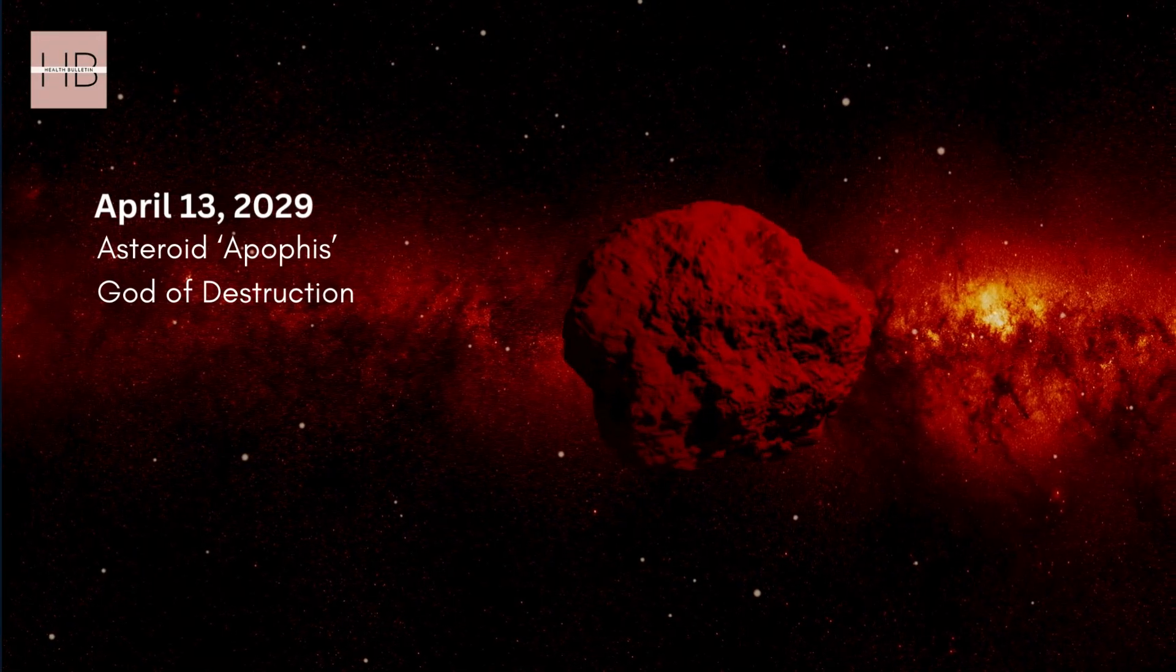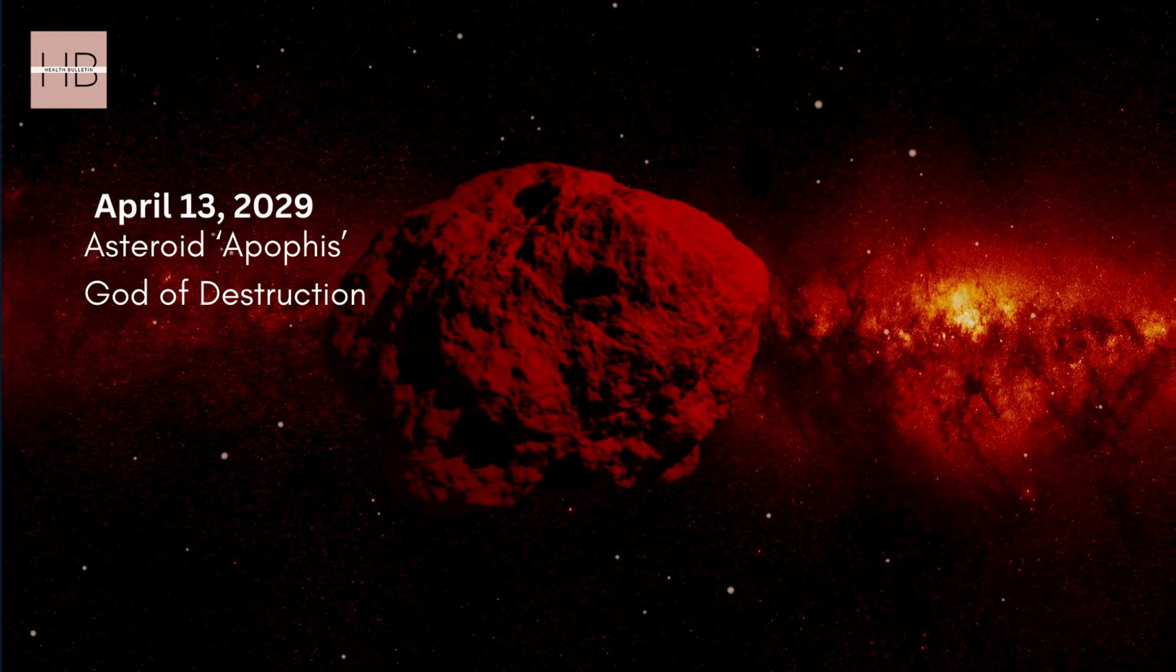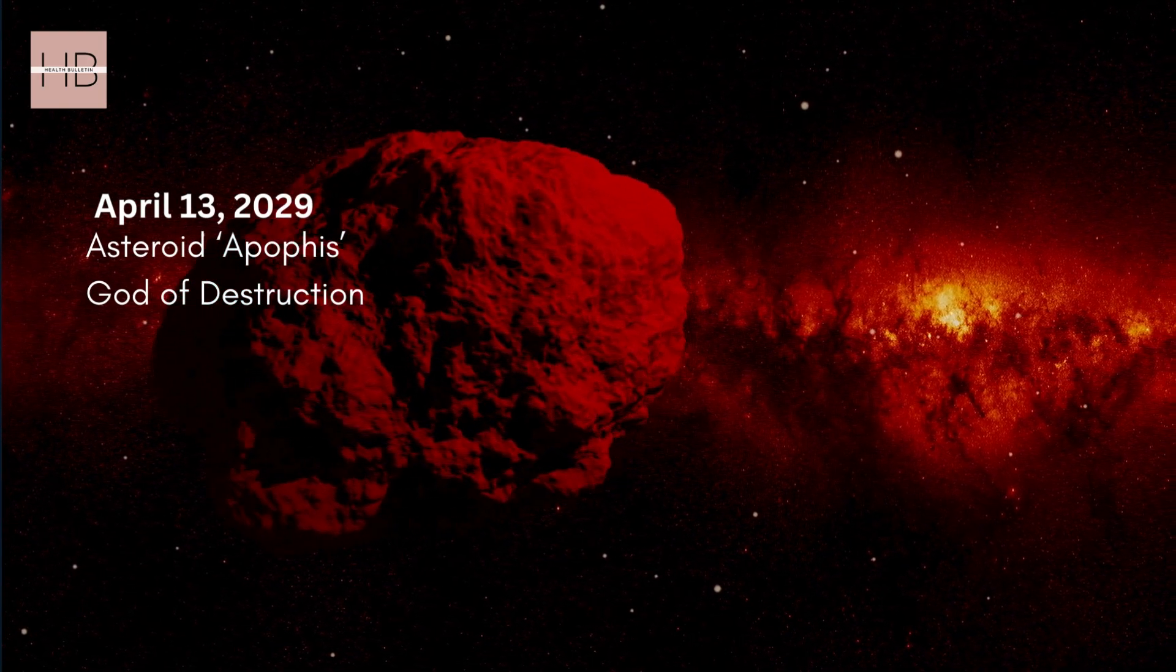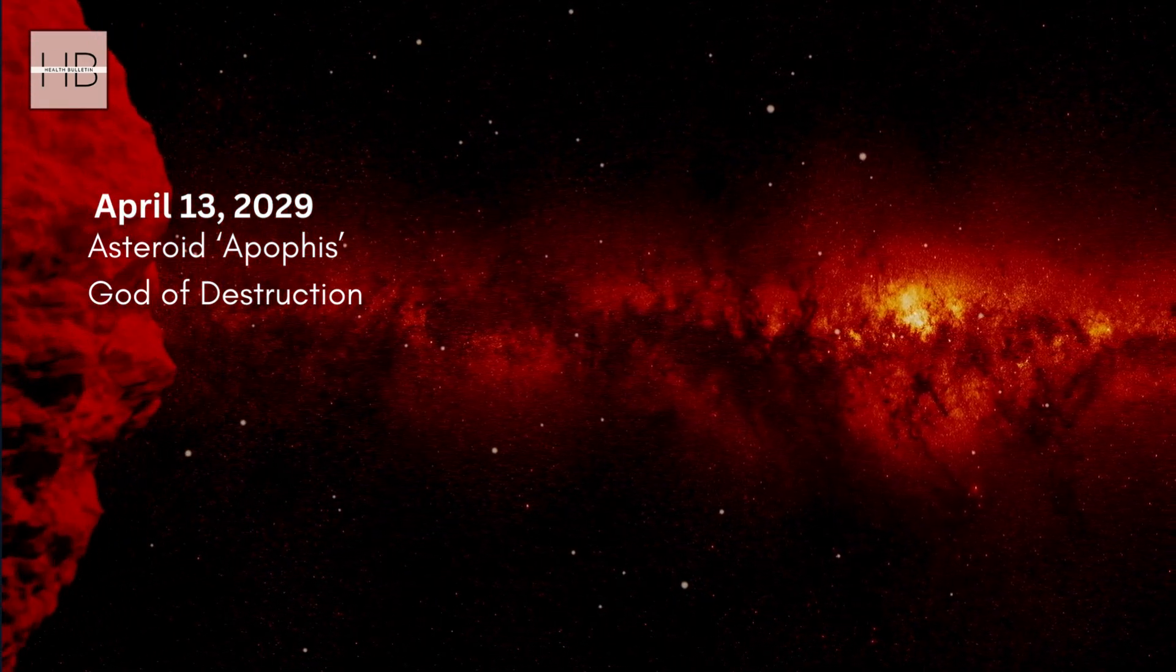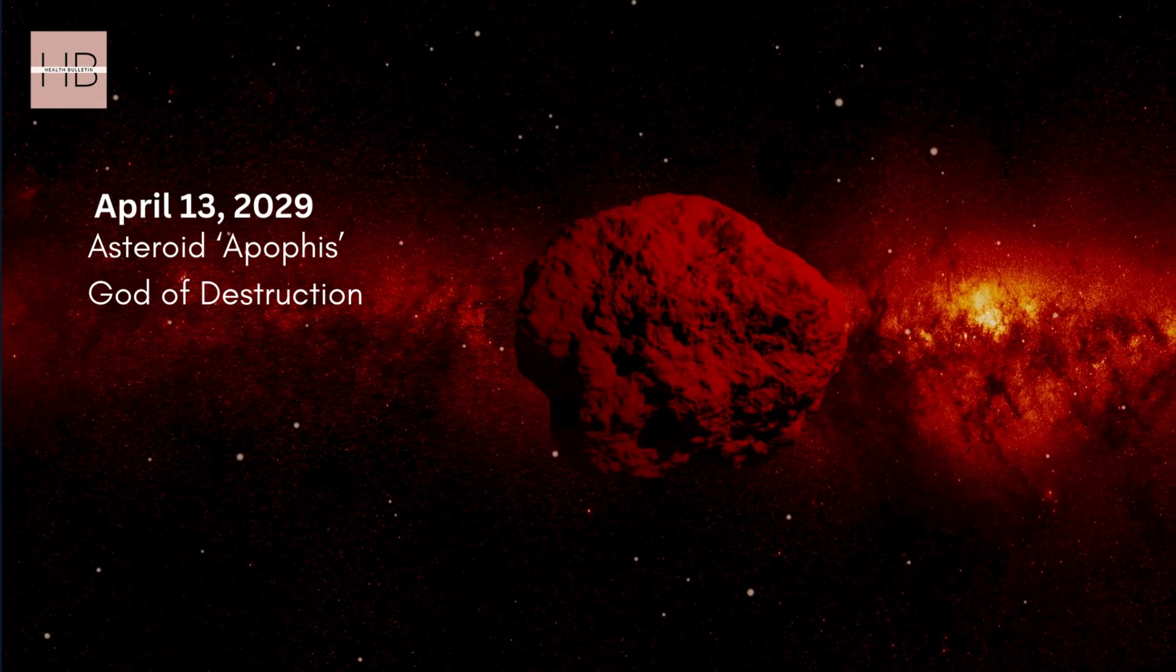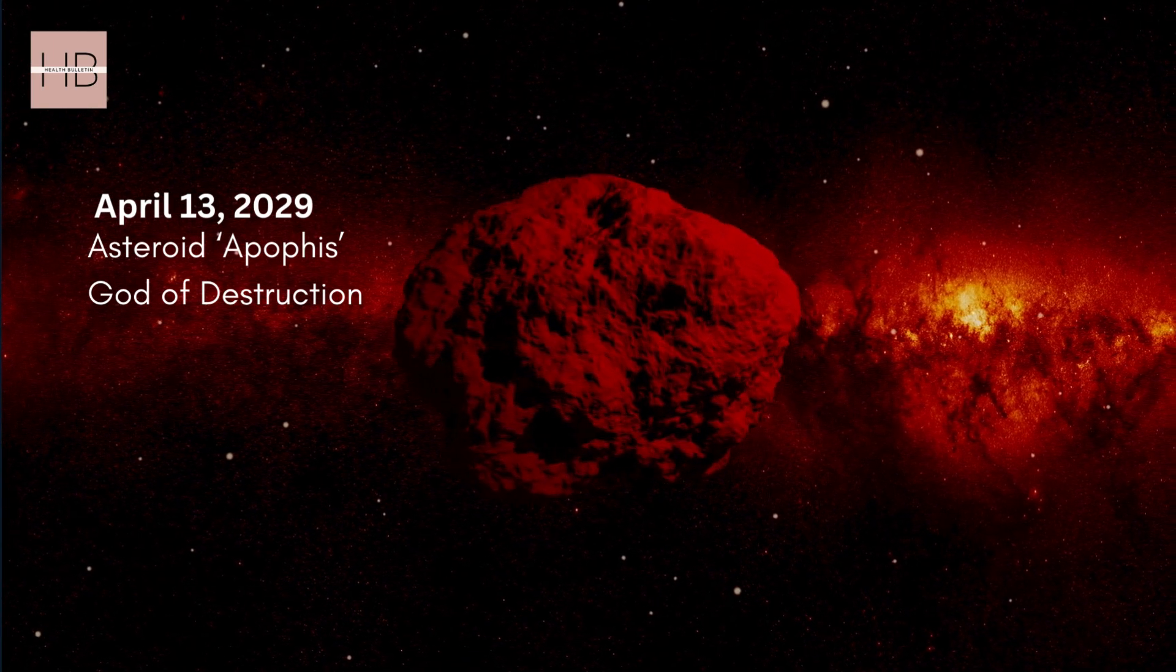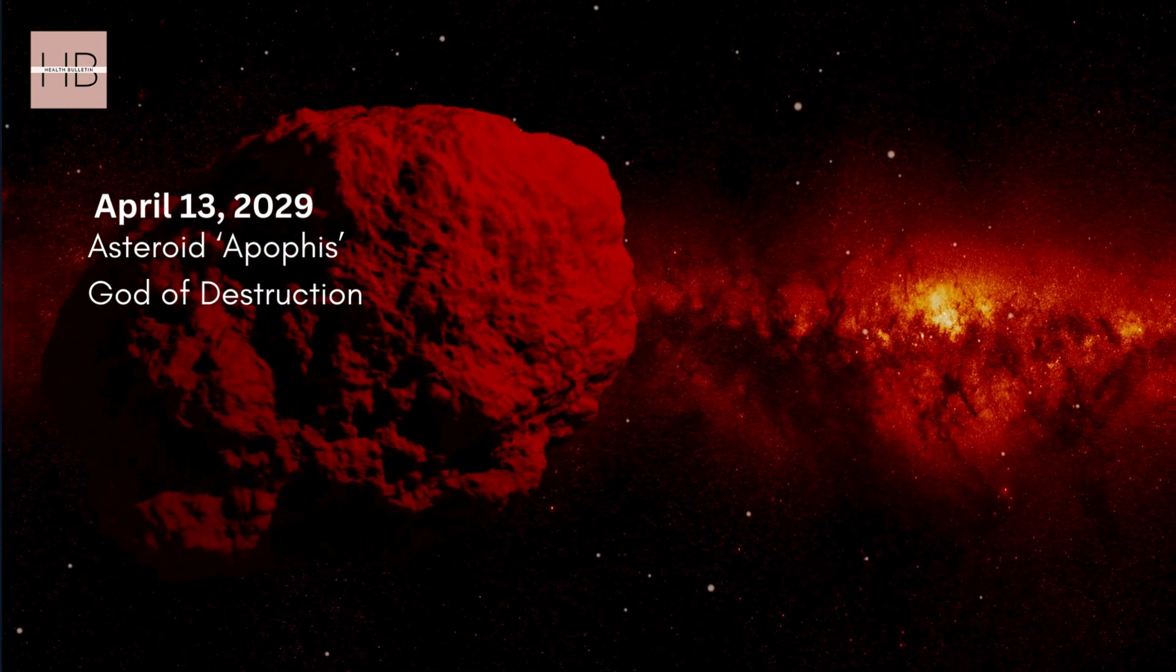Looking ahead on April 13th, 2029, the near-Earth asteroid Apophis, nicknamed the God of Destruction, will make an incredibly close approach to Earth, passing within approximately 48,280 kilometres. This historic event will be visible to the naked eye and will allow NASA's OSIRIS-REx spacecraft to study this 1,000-foot-wide celestial visitor up close.